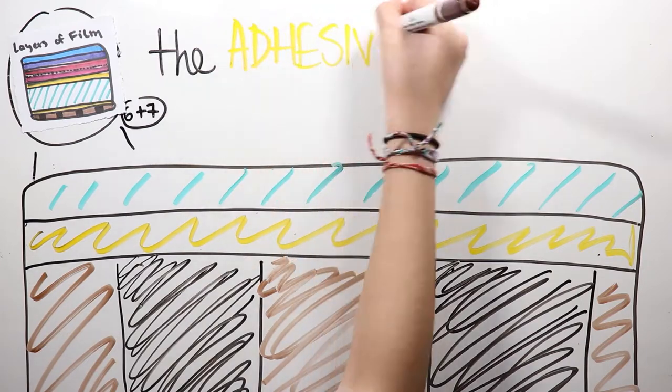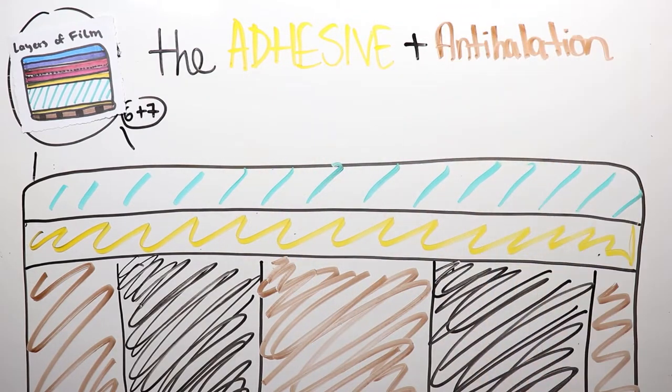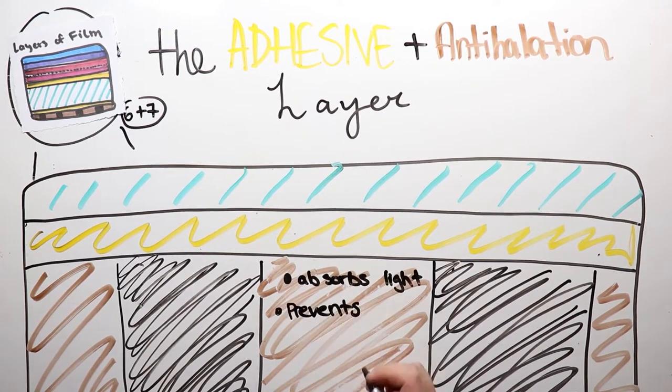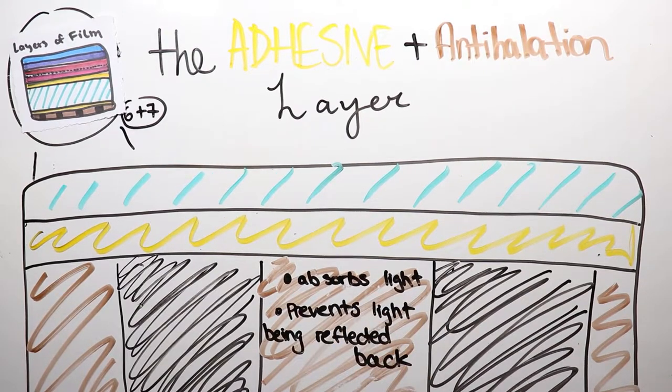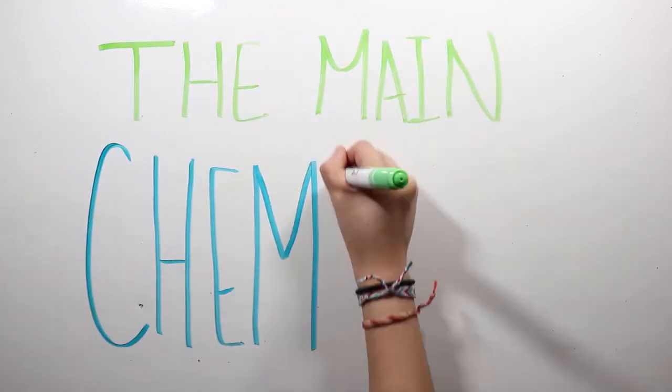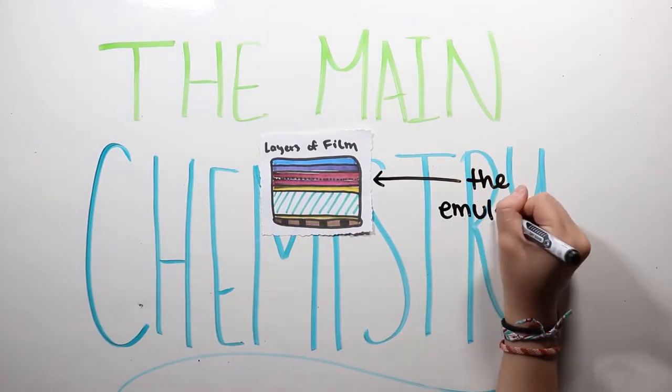After that is another layer of adhesive with an anti-halation coating. This coating absorbs light and prevents it from being reflected back into the emulsion. The main chemistry behind film photography occurs in the emulsion layer.